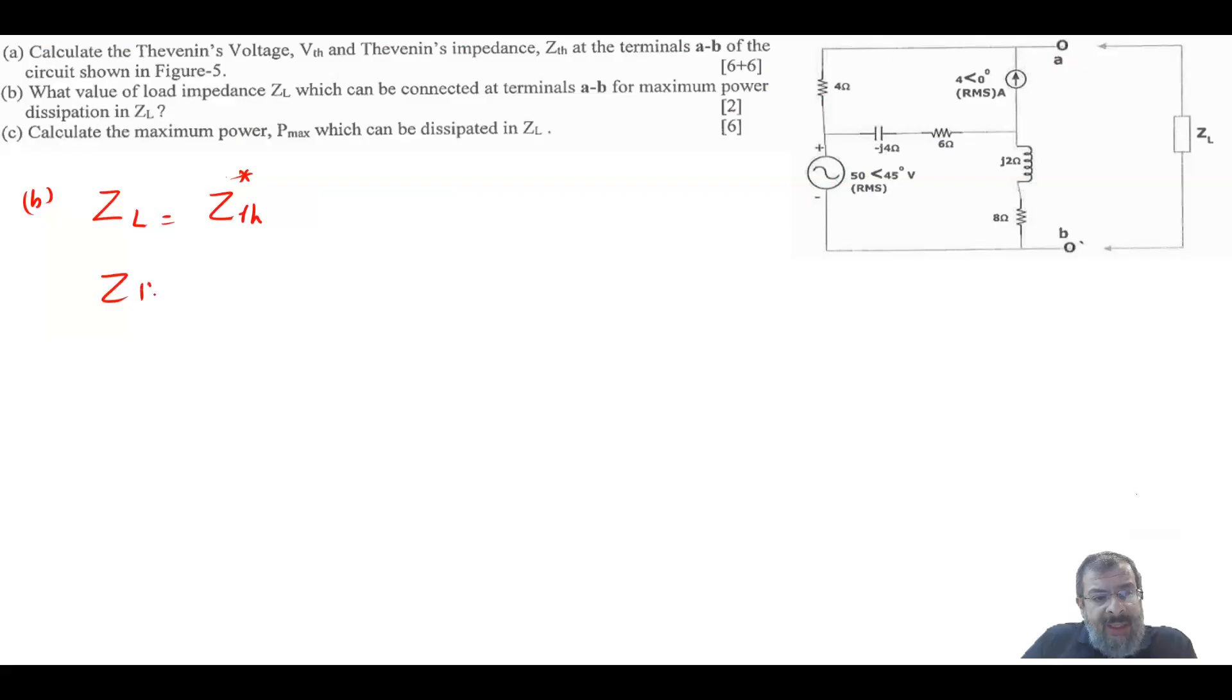but our Z Thevenin is only equal to 4 ohm. There is no imaginary part. So this would be equal to ZL. So your ZL would equal to this 4 ohm.